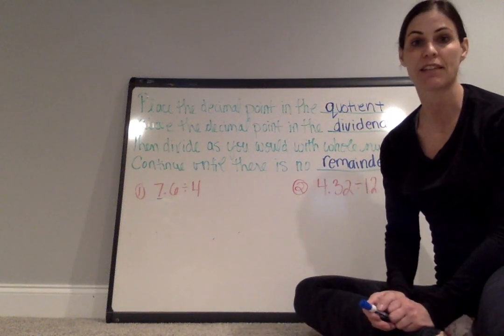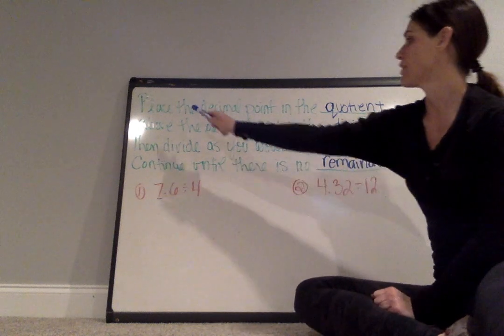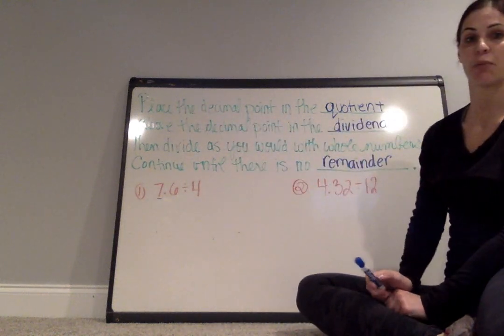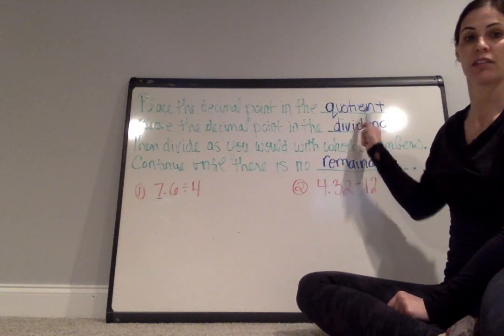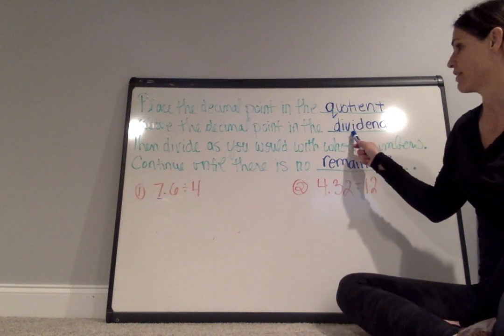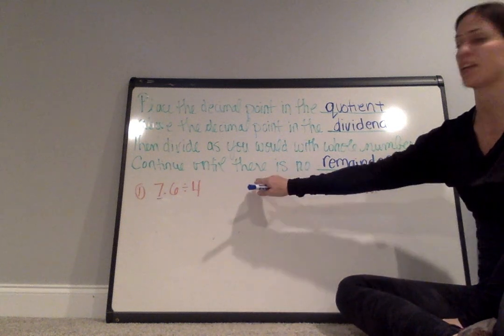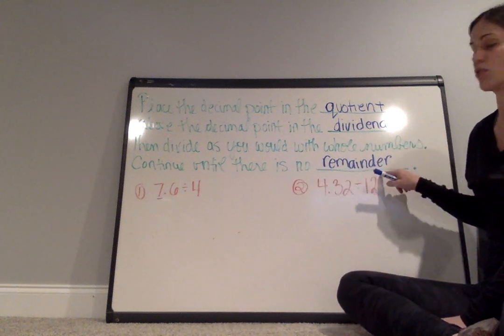We are going to take a look at dividing decimals by whole numbers. To begin, you are going to place the decimal point in the quotient above the decimal point in the dividend. Then you divide as you would with whole numbers and continue until there is no remainder.